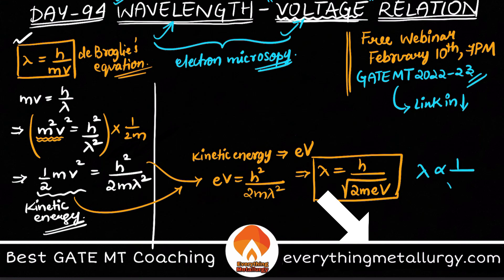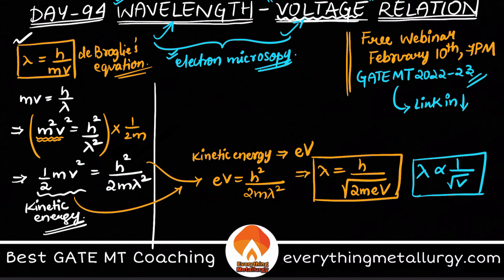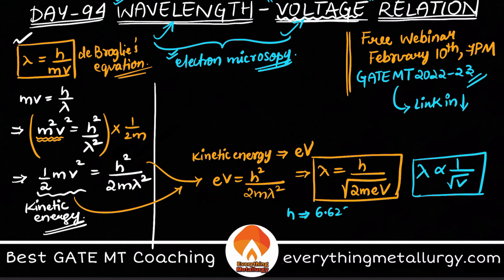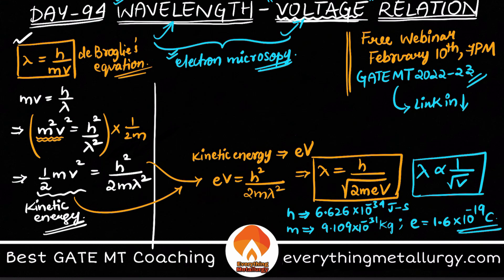Lambda is inversely proportional to the square root of V. To get the numerical equation, we plug in the constants. Planck's constant h is 6.626 × 10⁻³⁴ J·s, the mass of an electron m is 9.109 × 10⁻³¹ kg, and the electronic charge e is 1.6 × 10⁻¹⁹ coulombs. Substituting all these values into the formula gives us a simplified result.